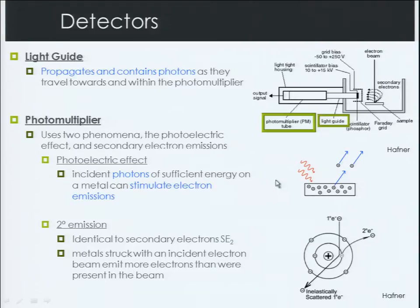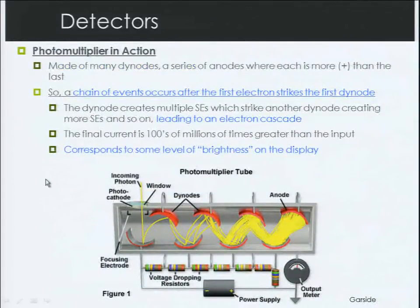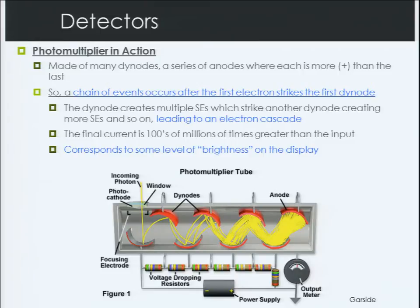The net result is a cascade effect, where every time an electron hits a metal it will generate secondary electrons, which will hit a metal, and the process continues. The photomultiplier works by photons striking the plate, producing electrons, and those are then multiplied by the secondary emission of more electrons — an electron cascade or electron amplification. The photomultiplier is made of many diodes, a series of anodes where each is more positively biased than the last. A chain of events occurs after the first electron strikes the first diode: the diode creates multiple secondary electrons, they strike another diode creating more secondary electrons, and so on. The final current will be hundreds of millions of times greater than the input, and this corresponds to some level of brightness which we see on our display.